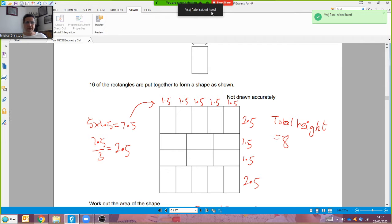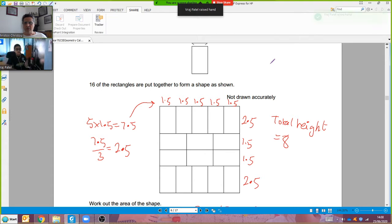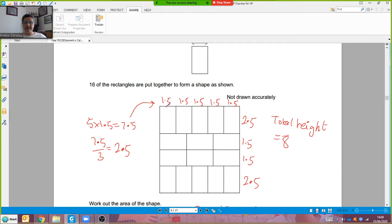Sorry Viraj I can't see you. Who's that, Ethan? No he's not going to be in this meeting. Okay, so that's disturbed my lesson now. I've got five lots of 1.5 which comes to 7.5 so I know the length across here is 7.5 centimeters.